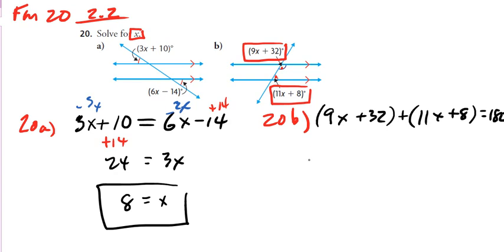So 9X and 11X, that gives us a total of 20X's. 32 and 8 gives us 40. So we're going to isolate the X. So we get that X term by itself by subtracting 40 from both sides. We get 140 over here, divided by 20.